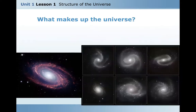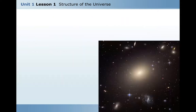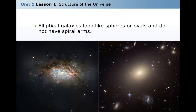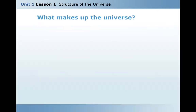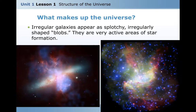Spiral galaxies are shaped like pinwheels — they have a central bulge from which two or more spiral arms extend. Elliptical galaxies look like spheres or ovals and do not have spiral arms. Irregular galaxies appear as splotchy, irregularly shaped blobs and are very active areas of star formation.